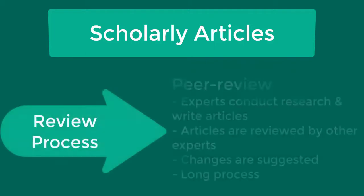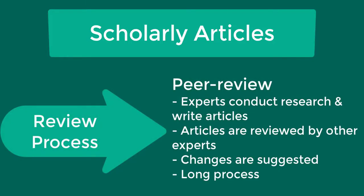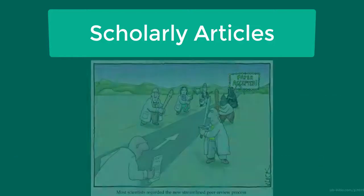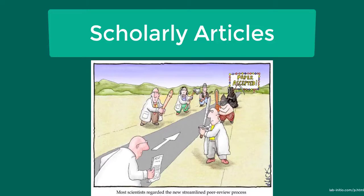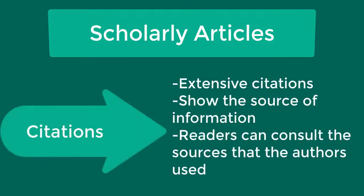The review process for these articles is called peer-review. Authors submit articles to journals to be reviewed by other experts in that particular field. The reviewing experts may suggest changes and recommend to the editor whether or not to publish the article. This process can be time-consuming and it may take months for an article to be published. Peer-reviewed articles include extensive citations that document the source of their information, allowing readers to verify facts and expand their research.